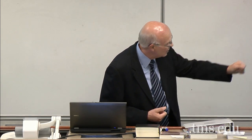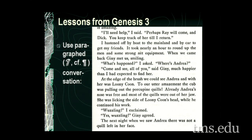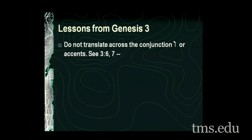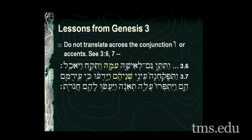'The next night' — a new subject. It's not someone, not 'I,' not Jenny. It's the next night, 'when we saw Andrea' — it's 'we' who are seeing, not I, not Jenny. Then it has to be a separate paragraph. So follow that along, especially with conversations — make certain you give proper paragraphing. Do not translate across the conjunction waw or its accents in Genesis 3:6 and 3:7.